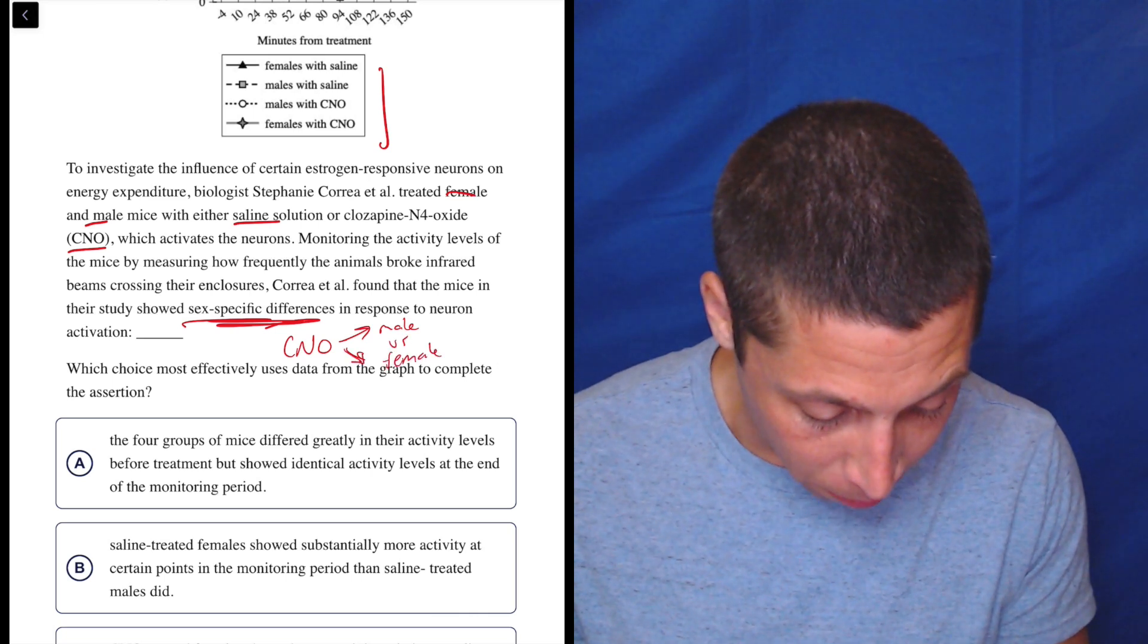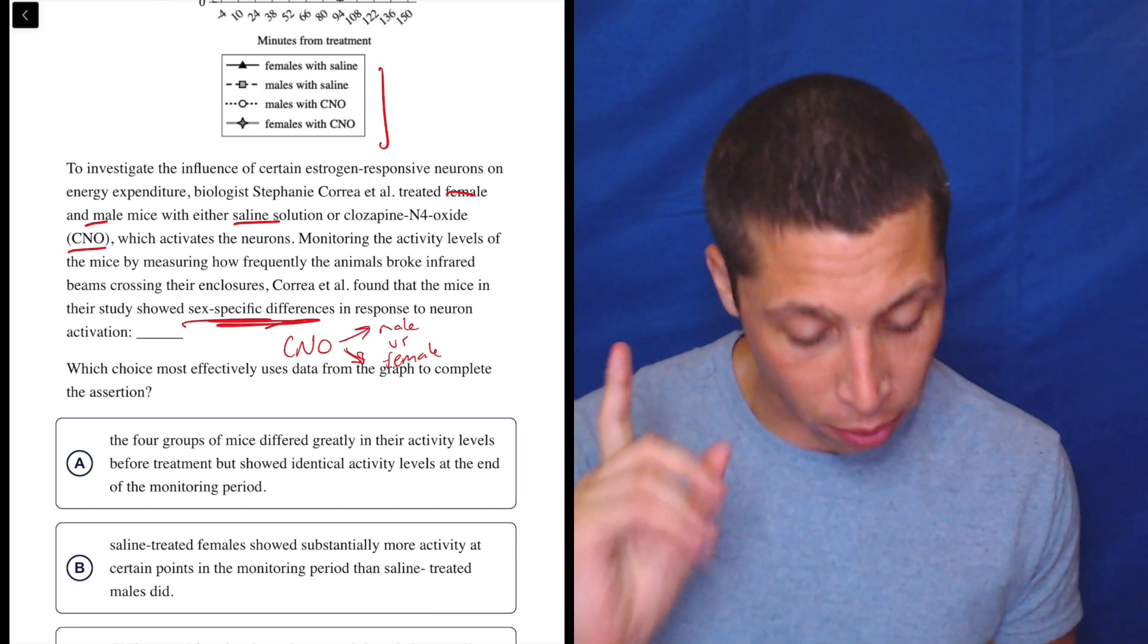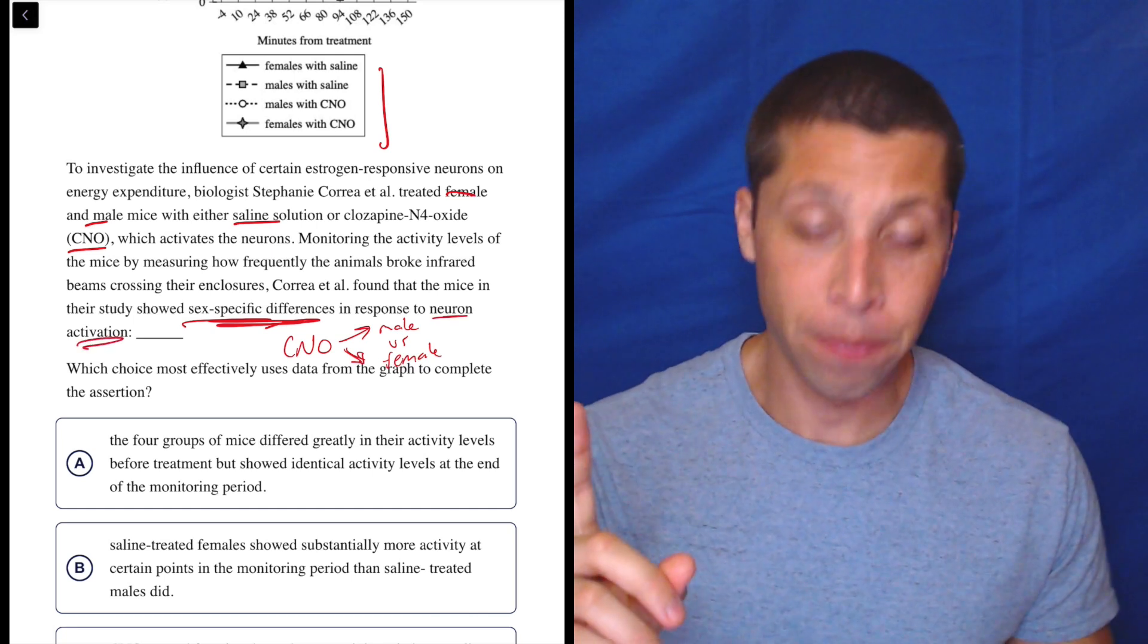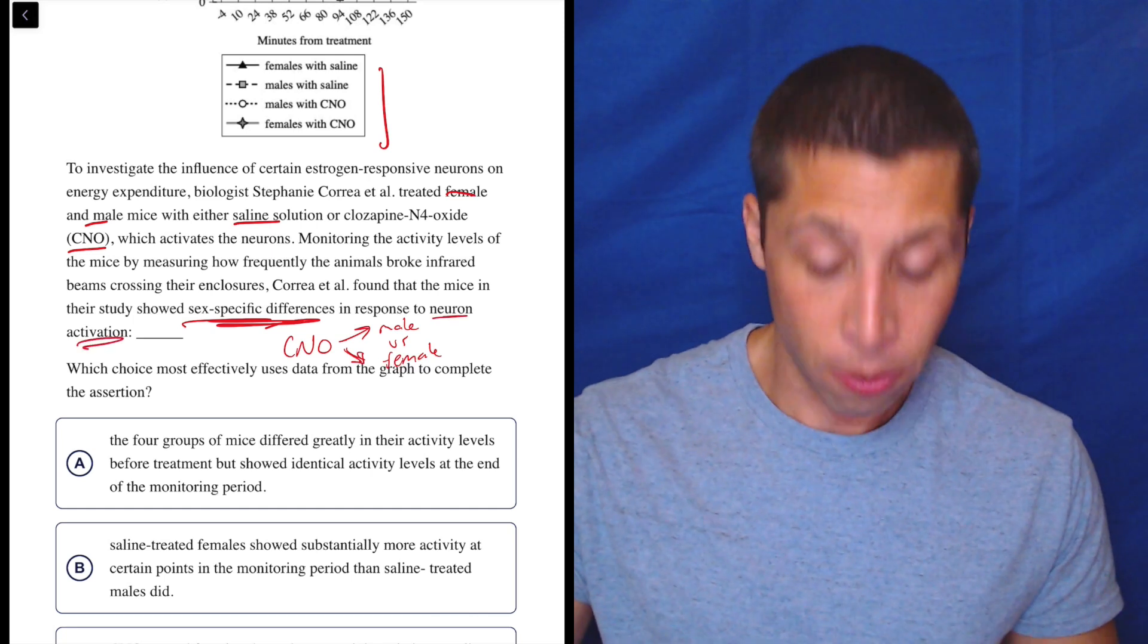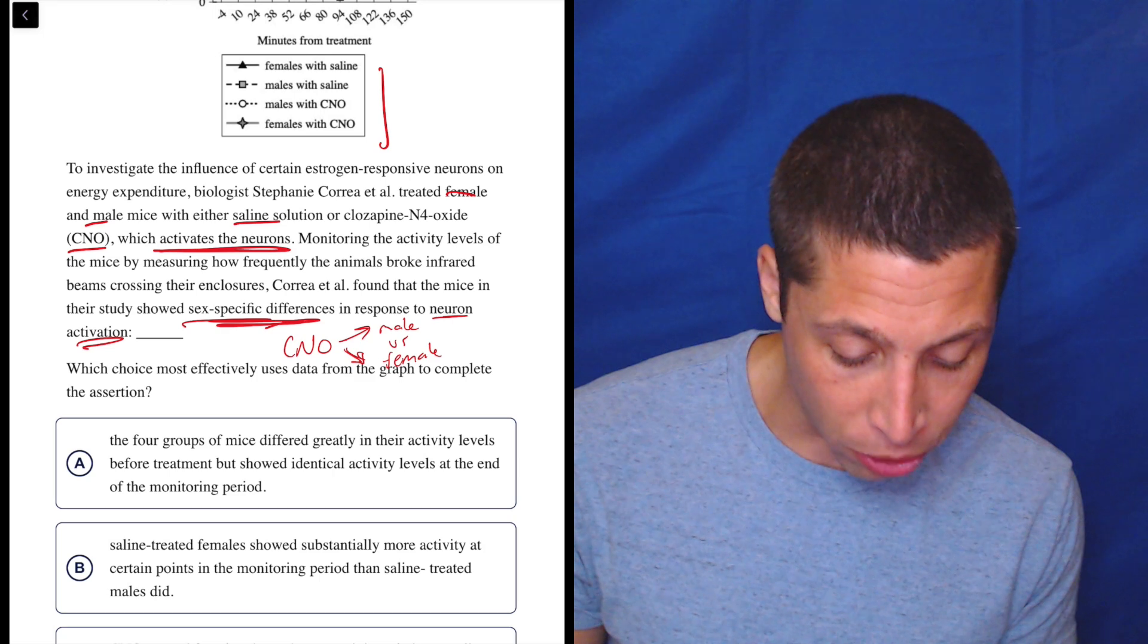That's kind of my dumb summary. So the CNO is important because they're activating the neurons. Now notice neuron activation is code for CNO because it says here, which activates the neurons. So this is a classic SAT move.